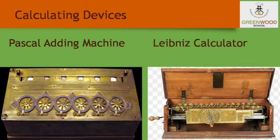Many devices were invented such as Pascal, Leibniz calculator, and Abacus. What is Pascal adding machine? Blaise Pascal, a French mathematician, invented the first mechanical calculator at the age of 19 in the year 1642. It uses wheels; numbers were displayed by rotating the wheels. It was capable of performing addition and subtraction.